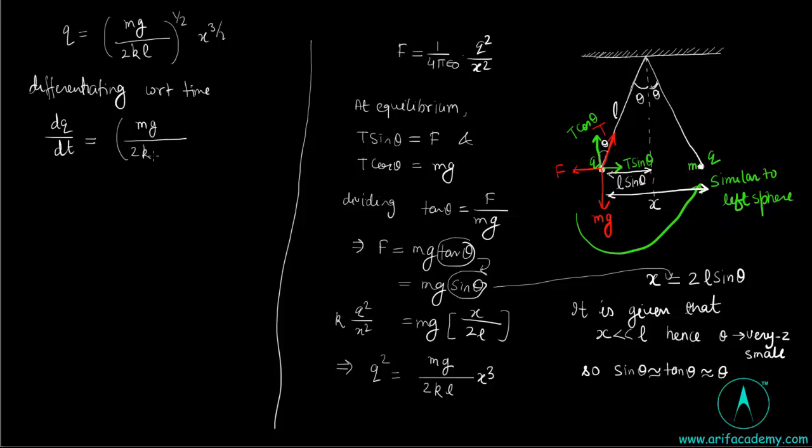This quantity in bracket is constant, so it will come out, and differentiating x power 3 by 2, we get 3 by 2 x raised to power half dx by dt. dx by dt is here velocity of approach of the two spheres.